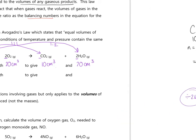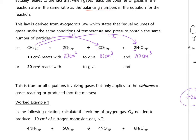As another example: 20 cm³ of methane reacts with 40 cm³ of oxygen (ratio 1:2), producing 20 cm³ of CO₂ (ratio 1:1) and 40 cm³ of water (ratio 1:2). When given gas volumes we can just use the balancing number ratio — but this only applies to volumes of gases, not masses. If given 0.4 g of methane, you would need to work out moles first.